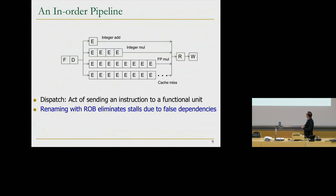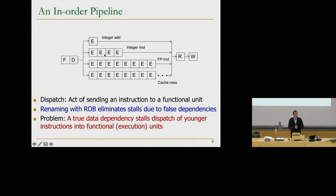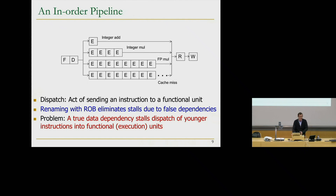So now we're going to build out-of-order execution. We're still in-order in the sense that if there's a true data dependency, we're not going to dispatch that instruction — dispatch meaning the act of sending an instruction to a functional unit; it needs to wait. Renaming with the reorder buffer eliminates stalls due to false dependencies, but a true data dependency stalls the dispatch of younger instructions. What if there were some other instructions later in program order that didn't need that value? They could have gone — but too bad, we've stalled the pipeline. Out-of-order execution is going to solve that problem.